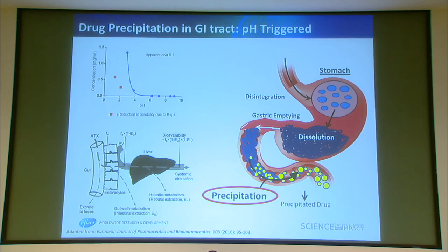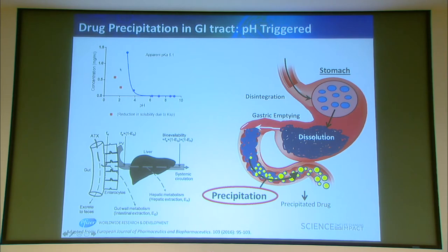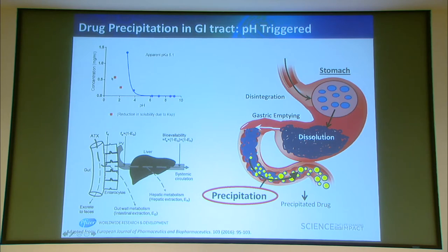For weakly basic compounds, a standard protocol in Pfizer is to generate a pH solubility profile. On the left side here is an example — it's a weak basic compound with low solubility at higher pH and higher solubility at lower pH, with an apparent pKa of 5.1. There's a difference between apparent pKa and true pKa depending on the method. Two points on the curve don't fit the Henderson-Hasselbalch equation, and those are points of interest for further experiments.